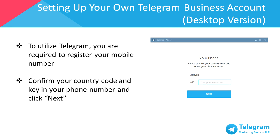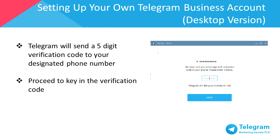To utilize Telegram, you're required to register your mobile number. Each country has a different country code, so make sure you've selected your country, keyed in your phone number, and then click OK. Telegram will send a five-digit verification code to your designated phone number. Once you've received your verification code via SMS or a phone call, proceed to key in the verification code.